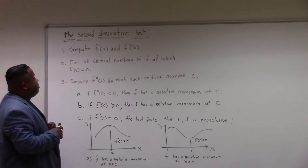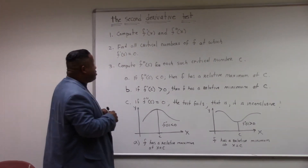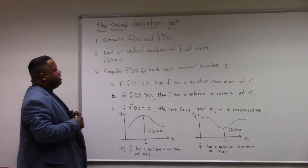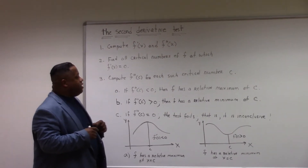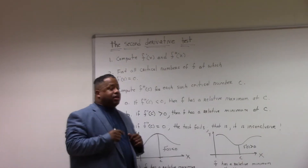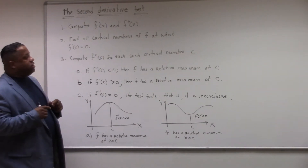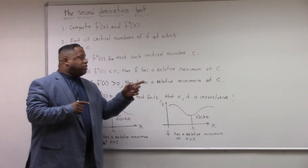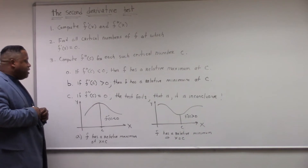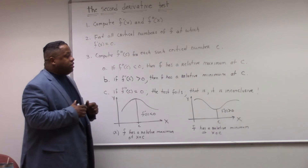Then we want to compute f double prime of c for each such critical number c. We see that if f double prime of c is less than zero, then f has a relative maximum at c. If f double prime of c is greater than zero, then f has a relative minimum at c. And of course, if f double prime of c is equal to zero, the test fails and it will be inconclusive.